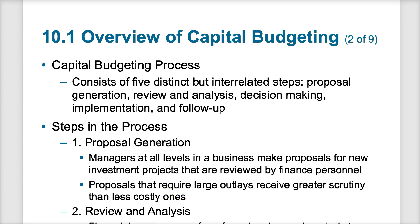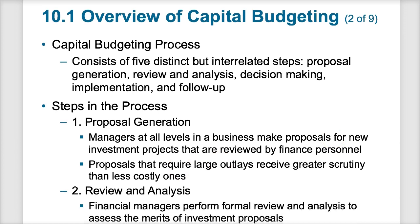Step two is review and analysis. Financial managers have to perform a formalized and organized analysis to assess the merits of each investment proposal. In order to prevent any type of liabilities or ethical issues, managers have to have a formalized structure on how they're going to review the potential of each investment, so that if something does go wrong, they could show that they did the proper due diligence in reviewing the analysis and their decision at the time.